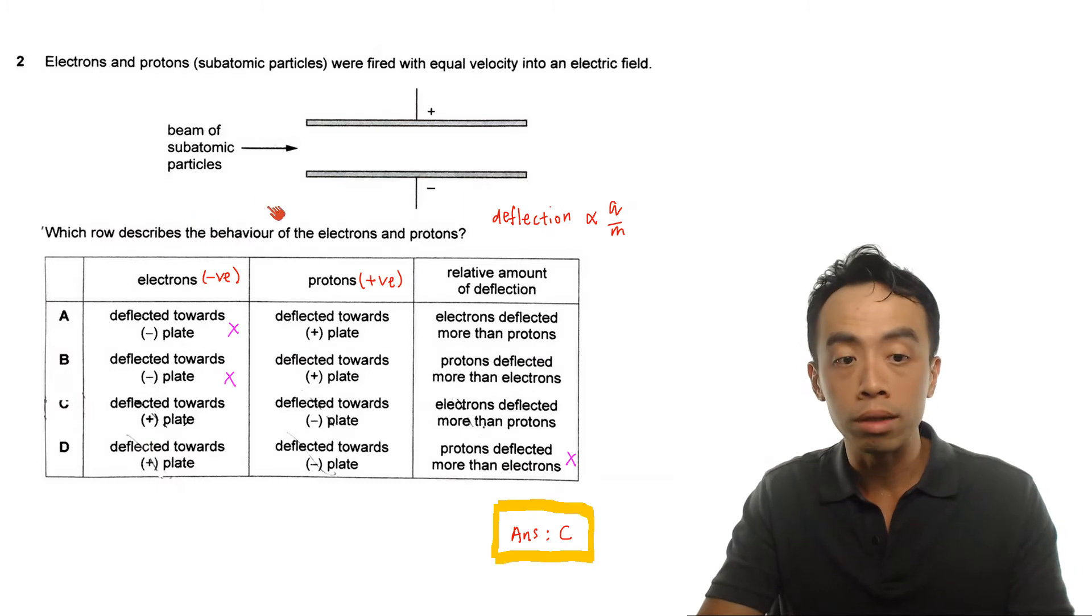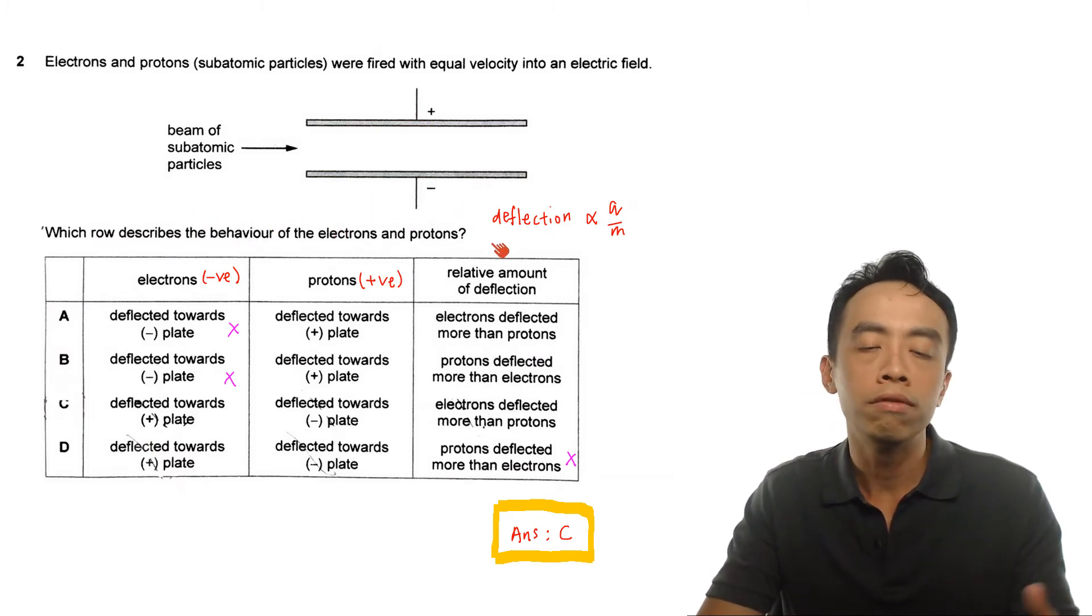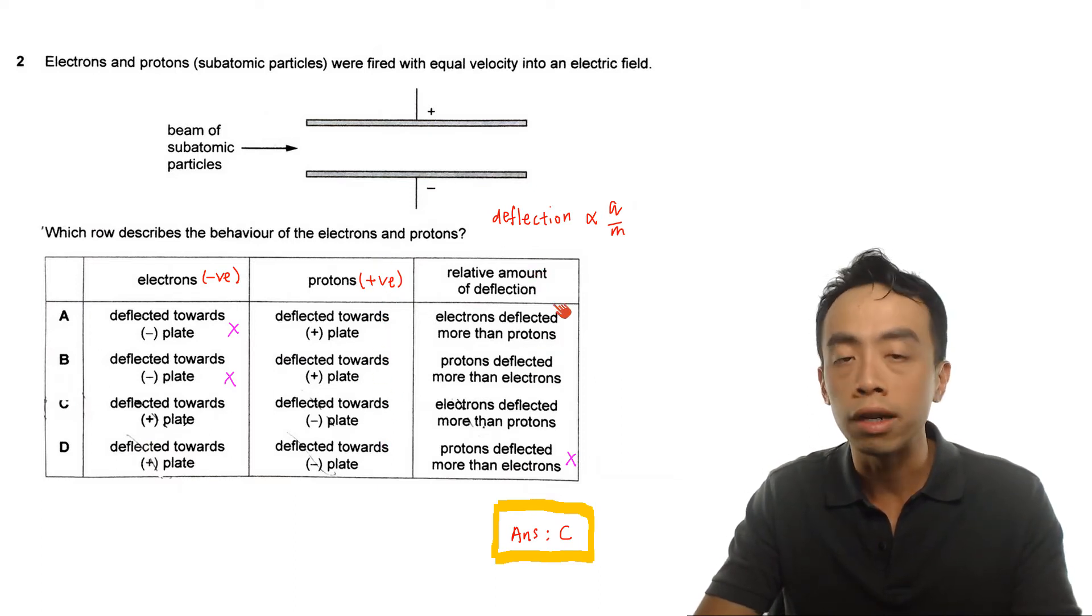So which row describes the behavior of the electrons and protons and we are given four options. One is describing where the electrons will be deflected towards, where the protons will be deflected towards and the relative amount of deflection or the magnitude of deflection.